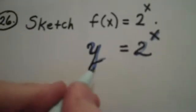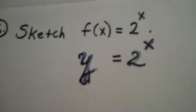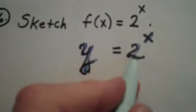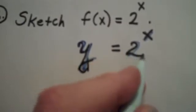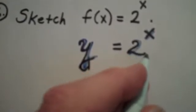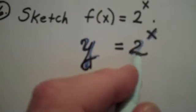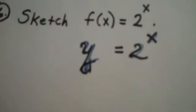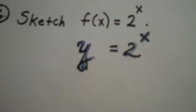That function is referred to as an exponential function. The reason, of course, is we have a base that's bigger than 0, not equal to 1, and our exponent is x, so it varies.